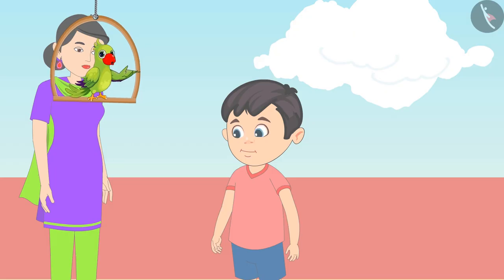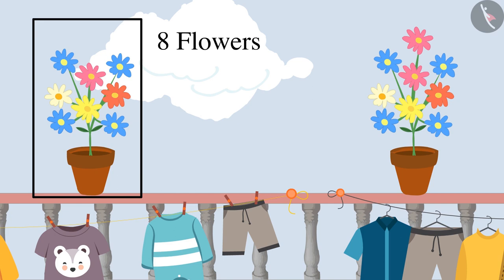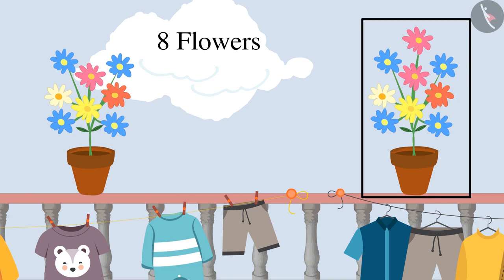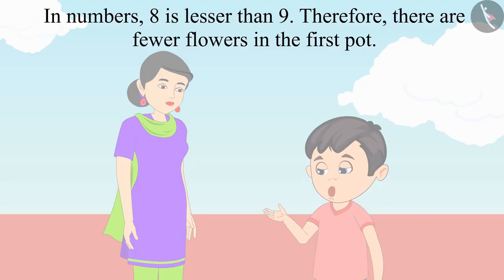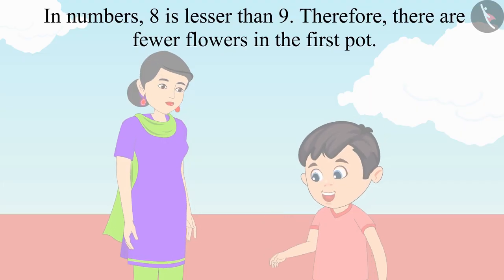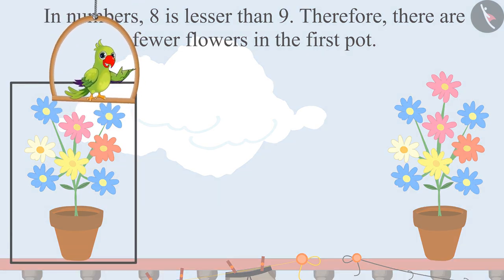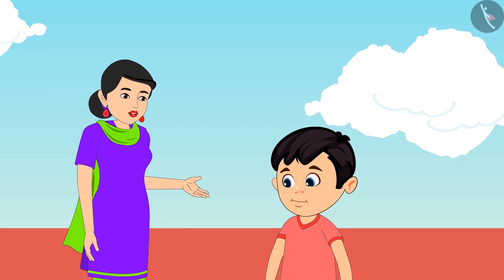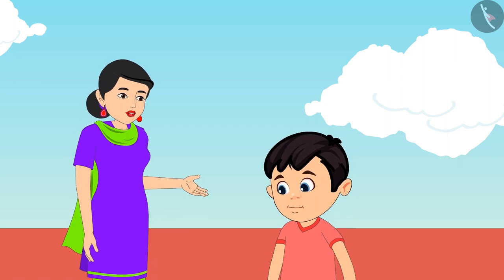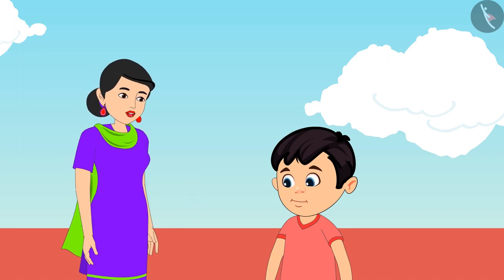There are eight flowers in that flower pot and nine flowers in the other flower pot. In numbers, eight is lesser than nine, therefore the first pot has fewer flowers. Was your answer also the same? Very good Chotu, once again you are correct! Come on, now let us take all the dried clothes quickly and go back downstairs.